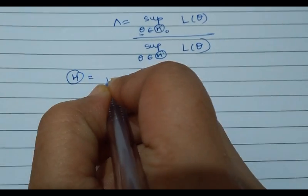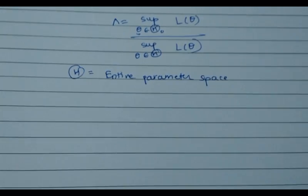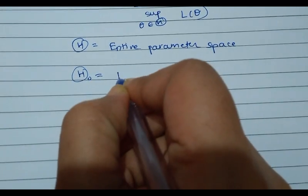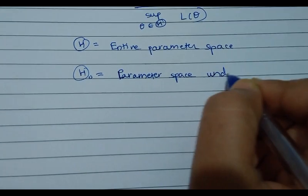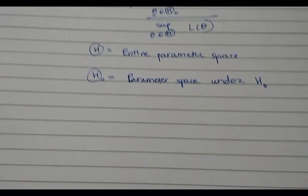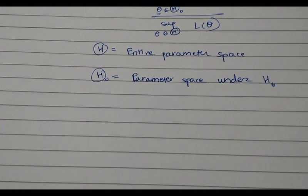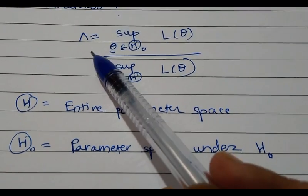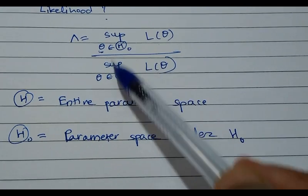Script-theta is the entire parameter space. In the case of the multivariate normal mean, script-theta will be the p-dimensional Euclidean space R^p. Script-theta-naught is the restricted parameter space under H0. For example, if H0 is mu positive in the univariate scenario, then script-theta-naught becomes (0, infinity). The likelihood ratio considers the supremum of the likelihood over this restricted parameter space and takes the ratio to the supremum over the full parameter space. Since script-theta-naught is a subset of script-theta, its supremum can be no larger.